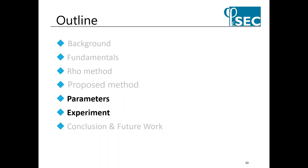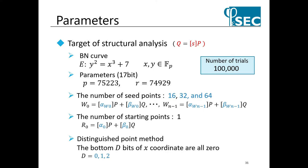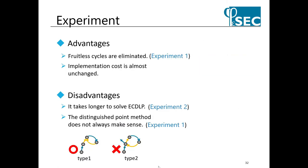Next are the parameters and experiments. We use the parameters of the BN curve shown here. Experiments were conducted for 16, 32, and 64 seed points. For the condition of the distinguished point to be sent to the server, we verified the case where the lower one or two bits of the x-coordinate of the generated rational point are all zero, and the case where the distinguished point method is not applied. The number of bits in the distinguished point method is called the number of thin-out bits. ECDLP to be solved was changed randomly and executed 100,000 times. The advantages and disadvantages predicted by theory were verified in experiment 1 and experiment 2 respectively.